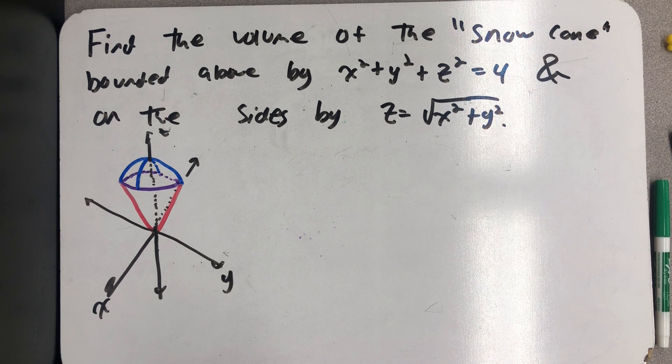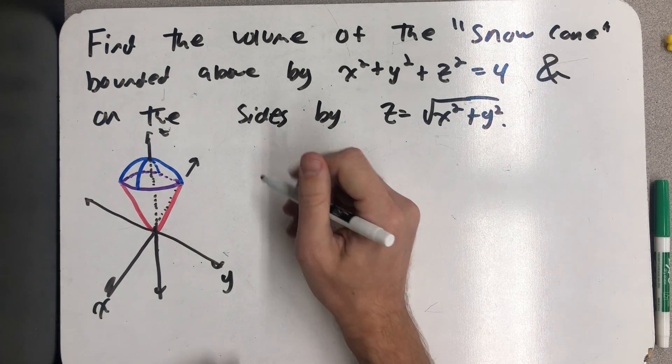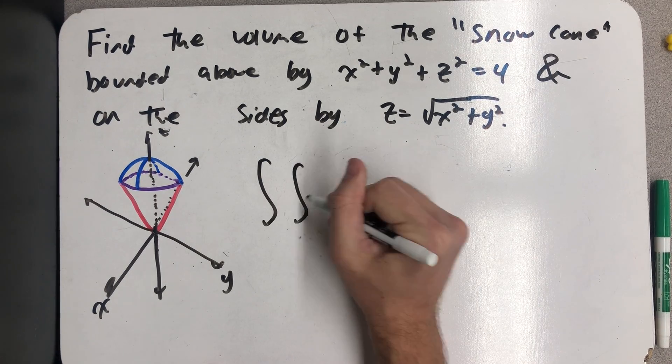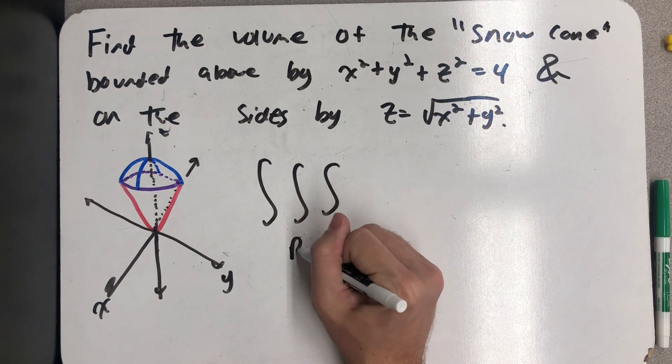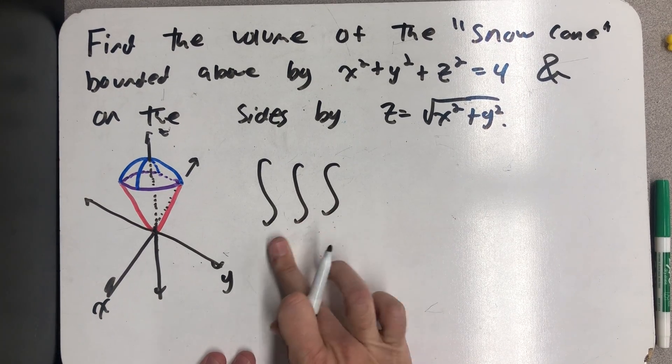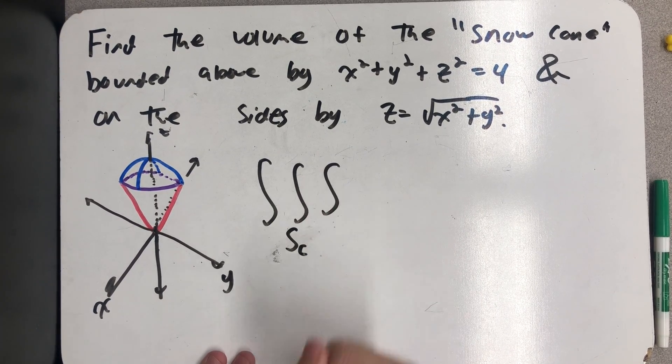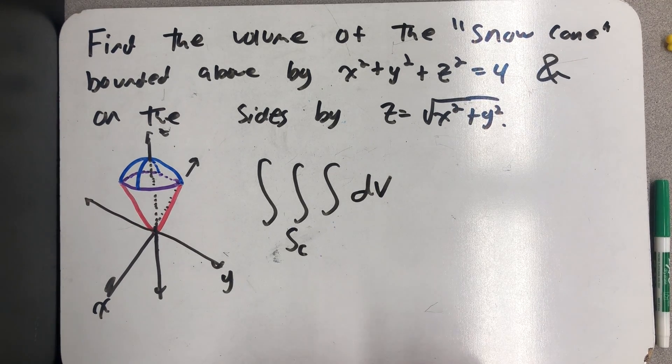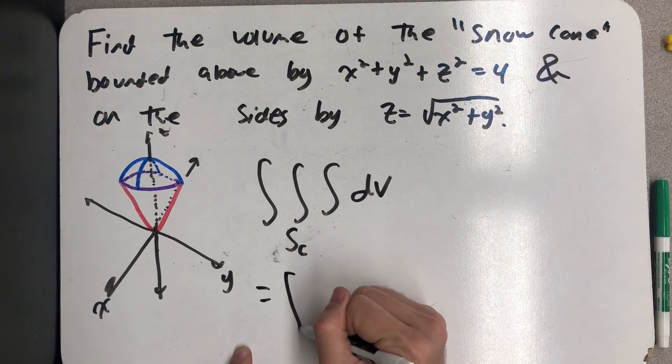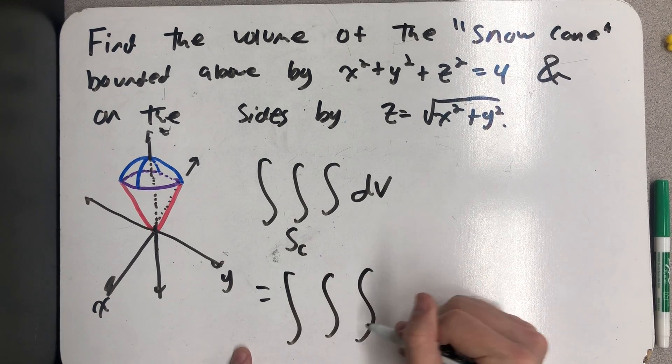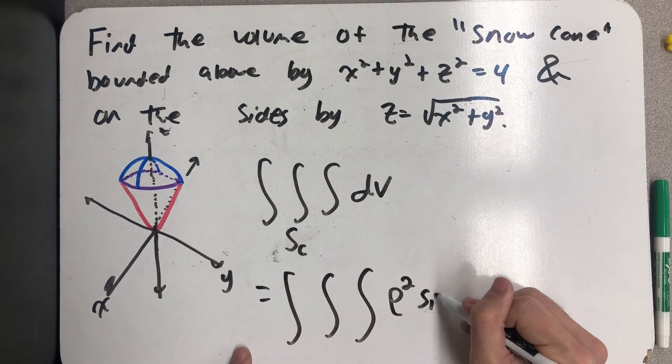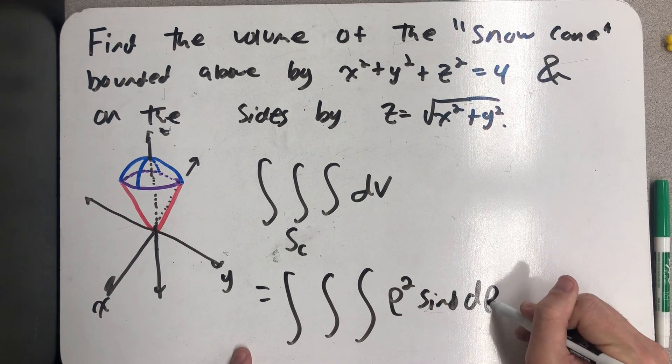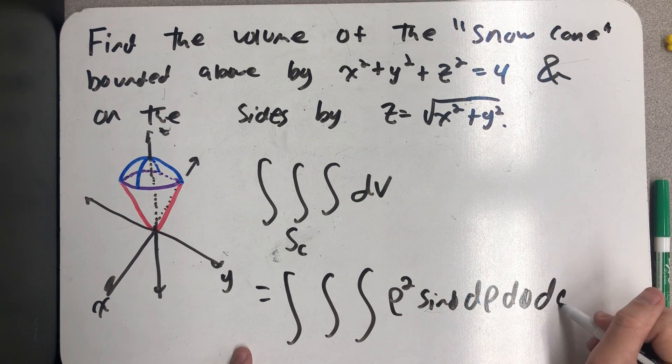And so what I'm going to do now is think about how to set up my bounds. I know what I will have is an iterated integral over the snow cone region, which I'm going to call that snow sub c, snow cone, dV. And in spherical coordinates, we know that the dV becomes rho squared sine phi, d rho, d phi, d theta.